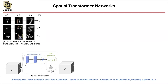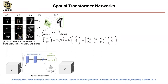What do we actually want to do? We want to have a translation, a scale, and a rotation for this localization network. What type of operation gives us translation, scaling, and rotation? That's called an affine transformation.